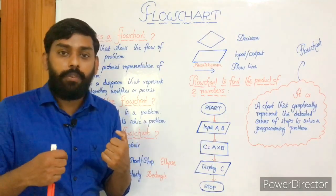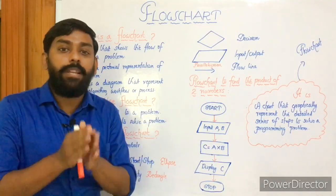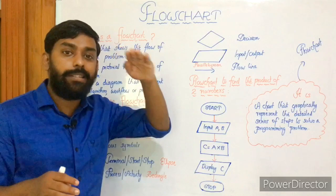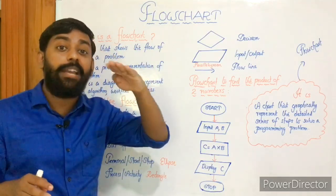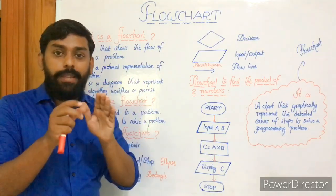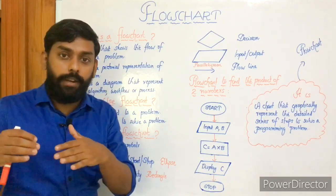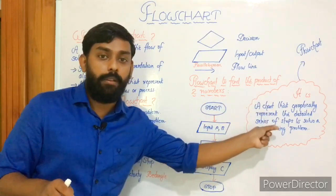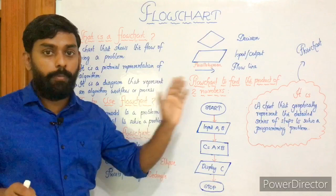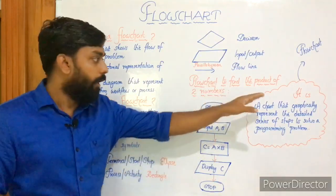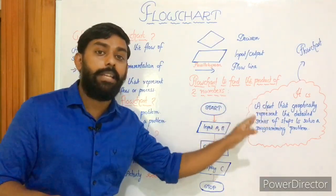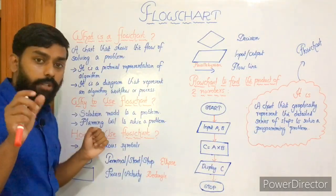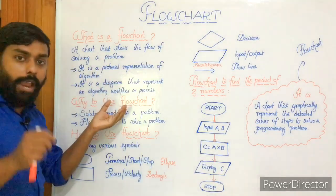By 'detailed series of steps,' we mean we cannot skip or miss any of the steps. In algorithm, it is also a step by step instruction — just by skipping the second step we cannot move forward. So it is a chart that graphically represents the detailed series of steps to solve a programming problem.